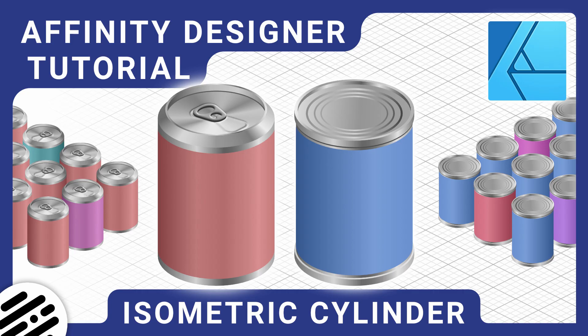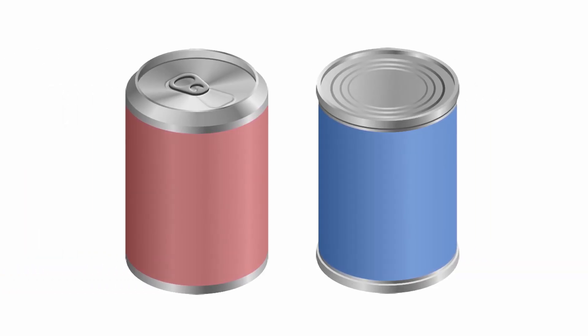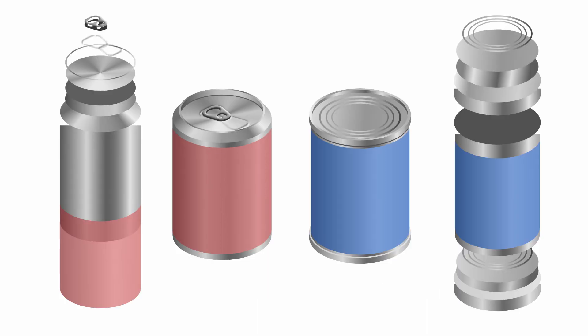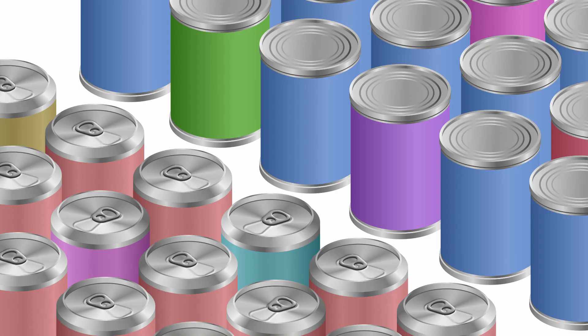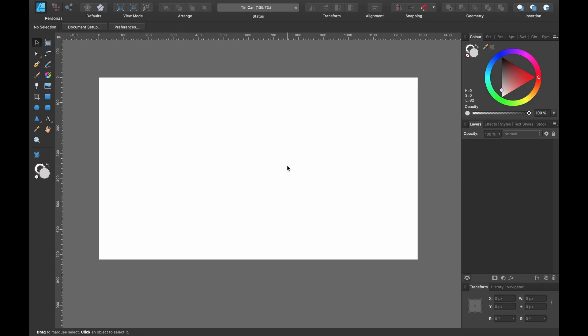Hello designers and welcome back to another Affinity Designer tutorial. Today I will show you how to create an isometric cylinder and then change it into something that looks like a can or a tin. We'll go from something that looks like this and end up looking like this, so that we can create something that looks like this. Let's jump right in.